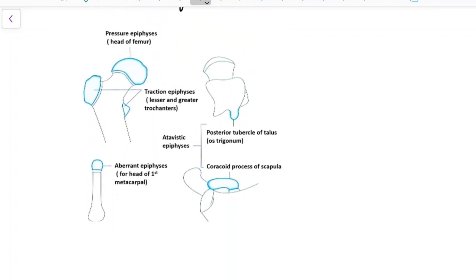Now this picture shows the various types of Epiphysis. Head of Femur is an example for Pressure Epiphysis. Greater and Lesser Trochanters are examples for Traction Epiphysis.